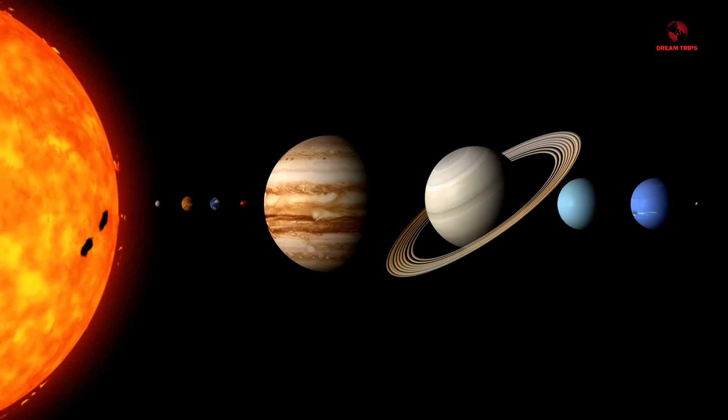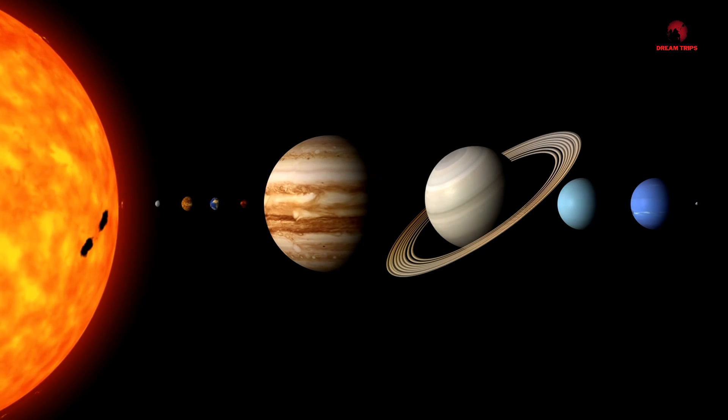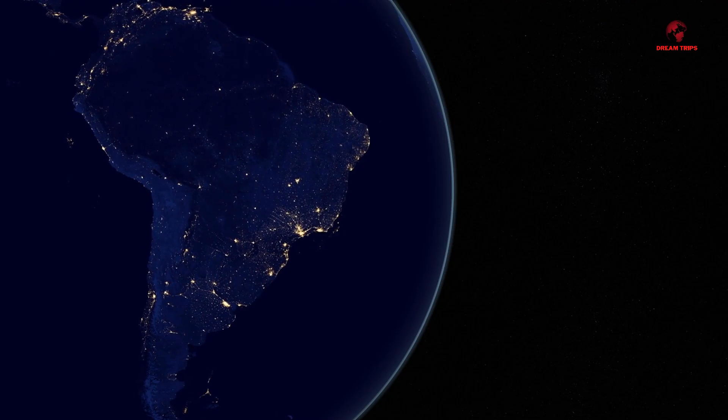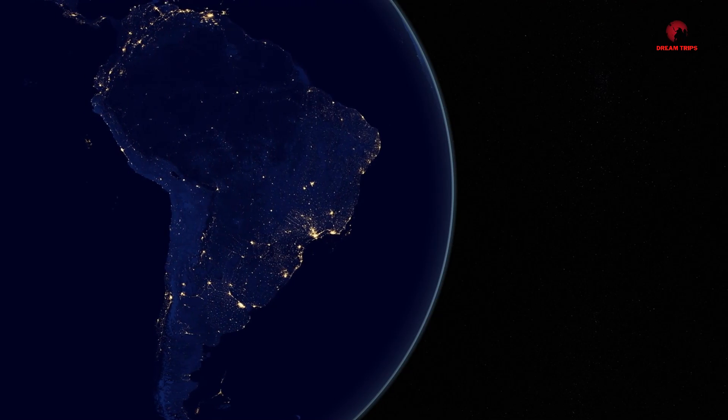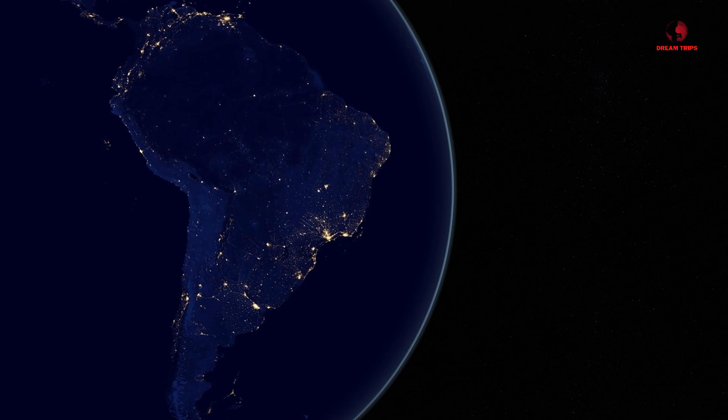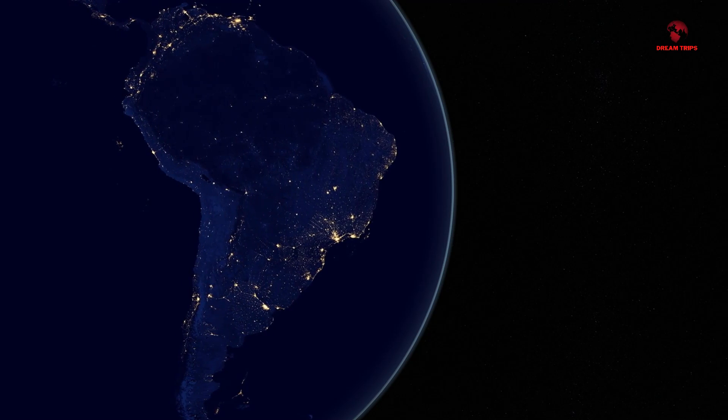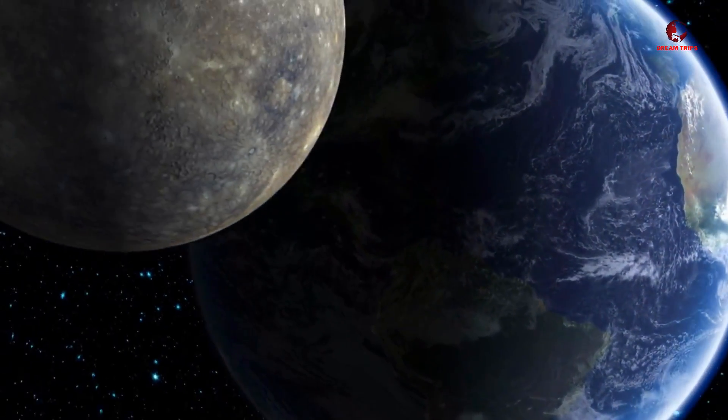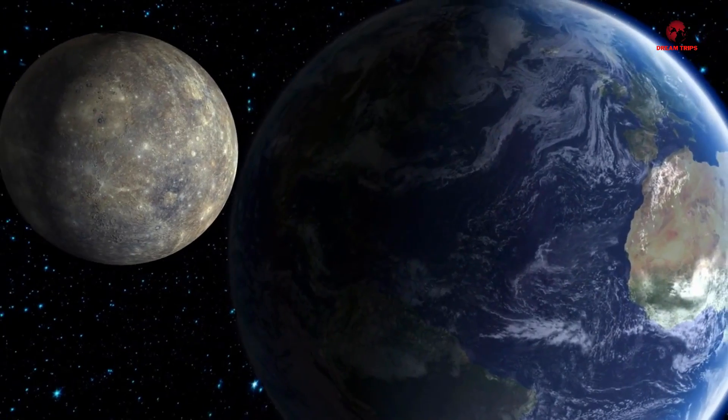Now imagine if Earth orbited UY Scuti. Given its colossal size and luminosity, any habitable zone would be vastly further out, making it challenging for life as we know it to exist. The intense radiation and powerful stellar winds from UY Scuti could strip away a planet's atmosphere, making it inhospitable. Furthermore, the variable brightness of such a massive star could lead to extreme temperature fluctuations on any orbiting body. For a fun fact, if Earth were placed in a stable orbit within UY Scuti's habitable zone, if such a zone could exist, it would experience daylight of a magnitude and scale beyond human comprehension, potentially altering fundamental biological processes dependent on the solar cycle.